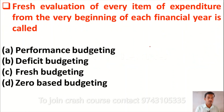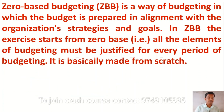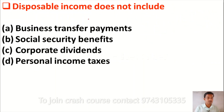The next question is: fresh evaluation of every item of expenditure from the very beginning of each financial year is called — option A: performance budgeting, option B: deficit budgeting, option C: fresh budgeting, option D: zero-based budgeting. The correct answer is option D, zero-based budgeting. In zero-based budgeting, the budget is prepared in alignment with organizational strategies and goals, starting from zero base. It is not based on the previous year's budget, and all elements must be justified for every period.